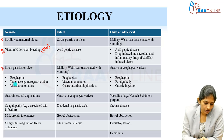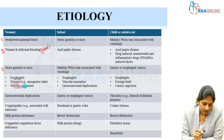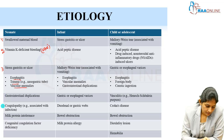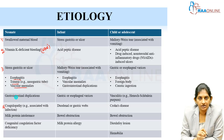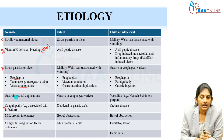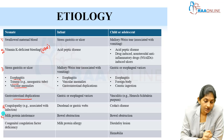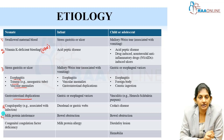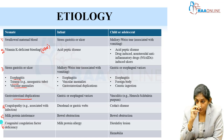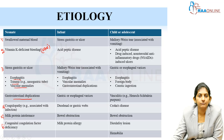In neonates, also consider trauma from insertion of a nasogastric tube, esophagitis, or vascular anomalies. Rule out coagulopathy. Anatomical disorders like gastro-intestinal duplication, gastric duplication, or duodenal duplication cysts can be present but will only be found on imaging. Rule out milk protein intolerance — ask for feeding history, whether anything other than human milk was given. Also check for coagulation factor deficiency on a coagulogram.